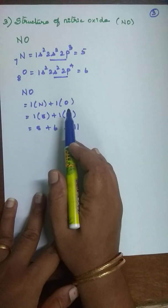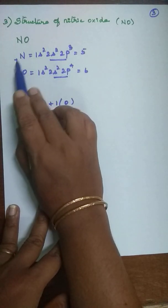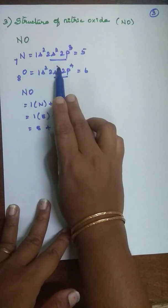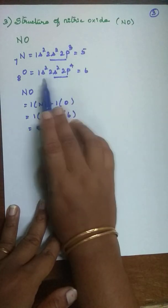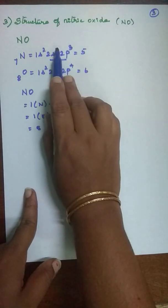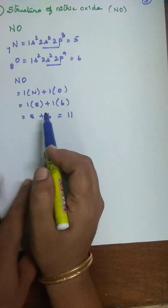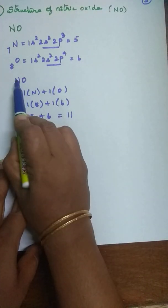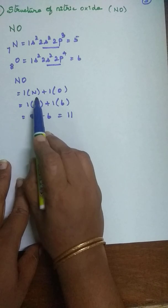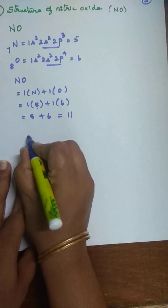Next we will see the structure of nitric oxide. The formula is NO. The atomic number of nitrogen is 7 and oxygen is 8. The valence electrons are: for nitrogen, 2+3=5, and for oxygen, 2+4=6. To find the total valence electrons, we count: 1 nitrogen gives 5, plus 1 oxygen gives 6, so 5+6=11 total valence electrons.